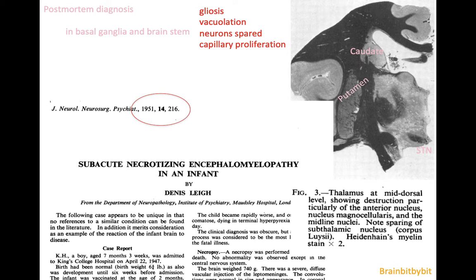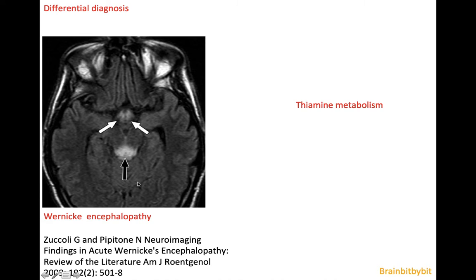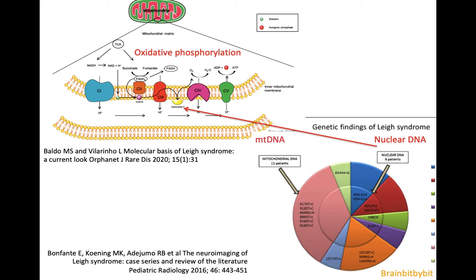Because the affected structures and this pattern resembled Wernicke encephalopathy, it was initially thought to be a thiamine problem. But soon they found that Leigh syndrome was located in the mitochondria and that there was a problem with oxidative phosphorylation. On the inner mitochondrial membrane, there are complexes of proteins that provide ATP for the cell, and the proteins in these complexes are encoded by both mitochondrial DNA and nuclear DNA. In Leigh syndrome, over 95 mutations in mitochondrial and nuclear DNA have been described, explaining the heterogeneous presentation of this disease.